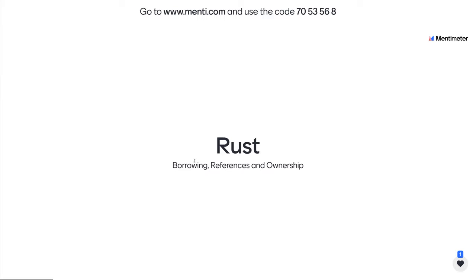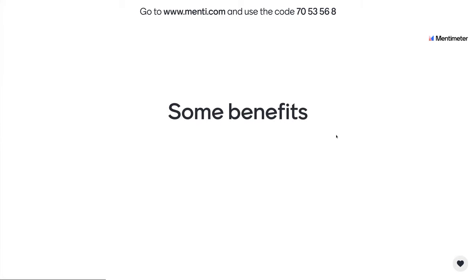How borrowing and references are talking about the same thing, and how ownership relates to these other two concepts. To begin with, we're going to mention a few benefits of the system. The Rust ownership model ensures there will be no data races in your code given that you follow safe Rust, which you will do unless you explicitly tell it not to be safe. The compiler can basically ensure there are no data races because of the strict ownership model. It can also guarantee very good runtime speed by default, because you will not suffer unnecessary copies unless you explicitly ask to.